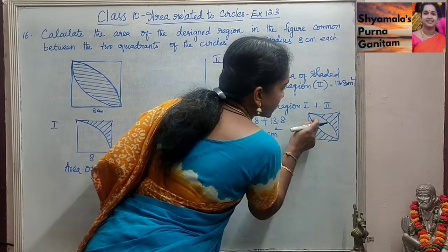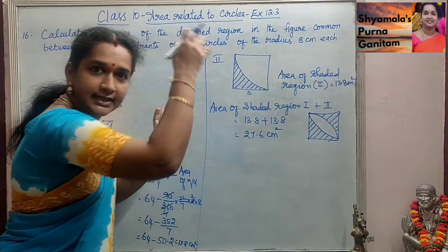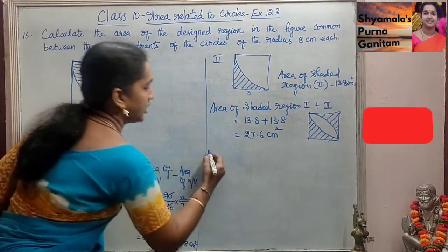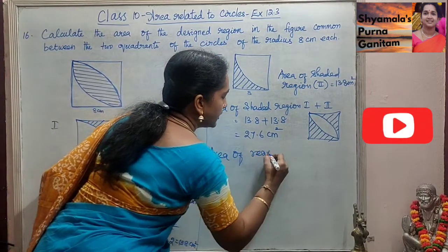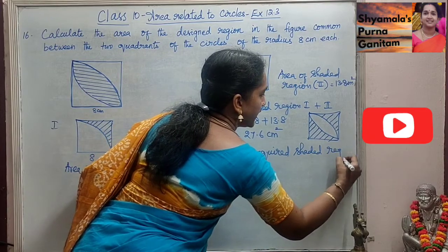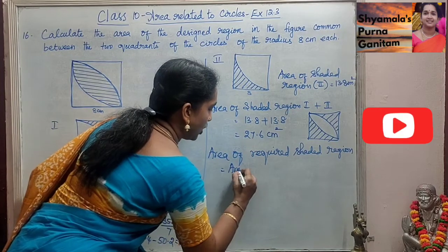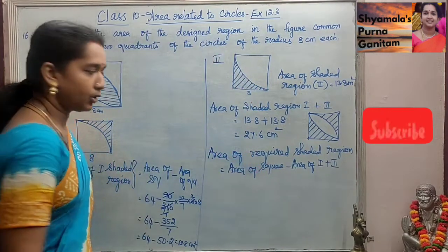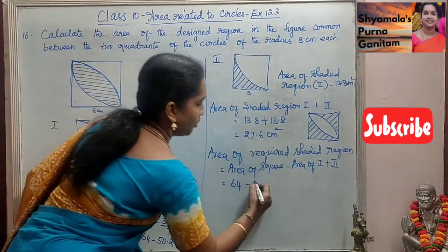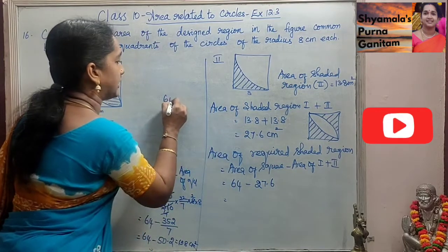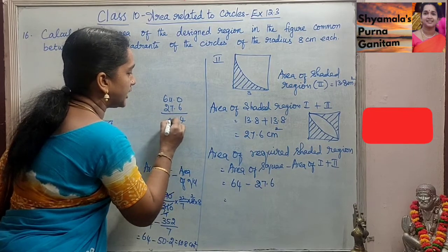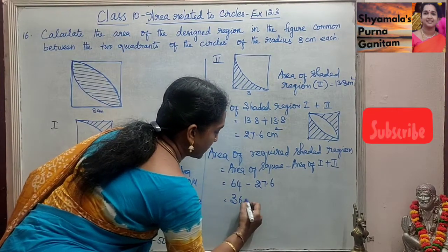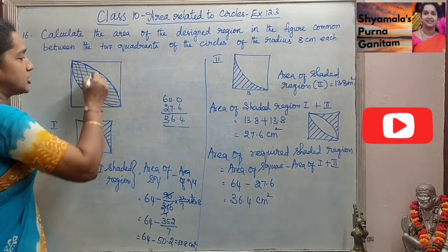But we don't want this outer shaded region — we need the empty inside region. So: area of required shaded region = area of square − (area of region 1 + 2) = 64 − 27.6 = 36.4 cm².